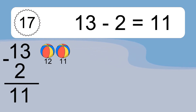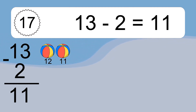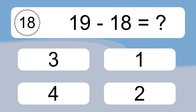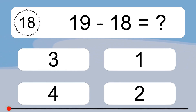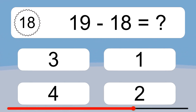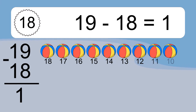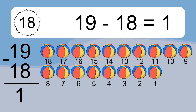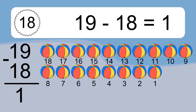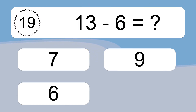13 minus 2 equals 11. Let's count it: 12, 11. 19 minus 18 equals what? 19 minus 18 equals 1. Let's count it: 18, 17, 16, 15, 14, 13, 12, 11, 10, 9, 8, 7, 6, 5, 4, 3, 2, 1. 13 minus 6 equals what?